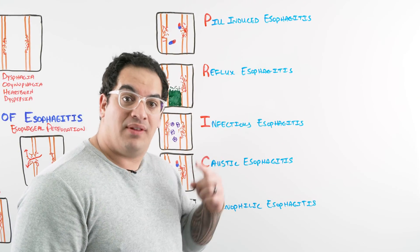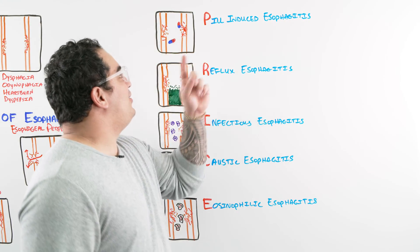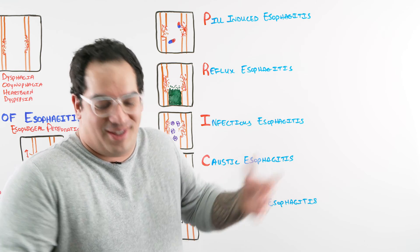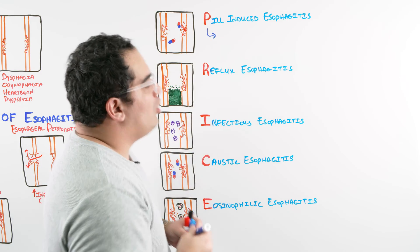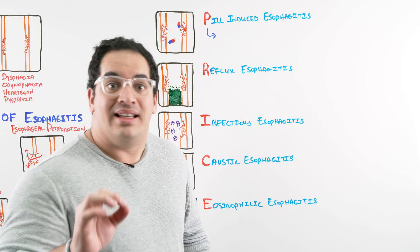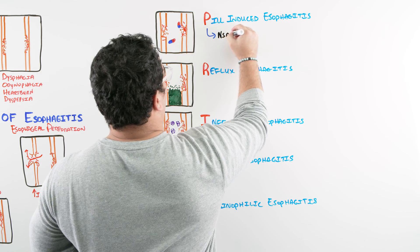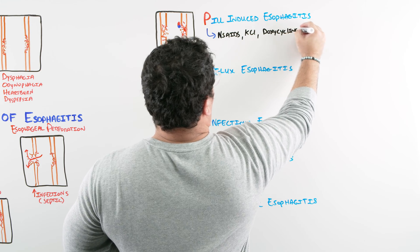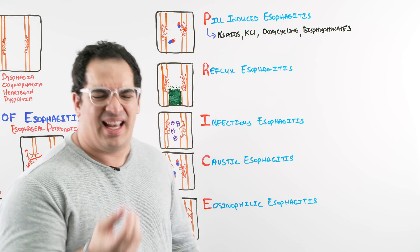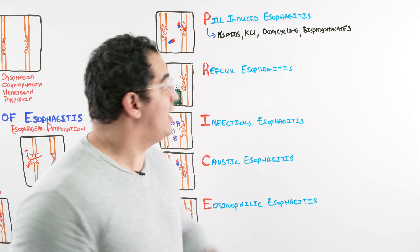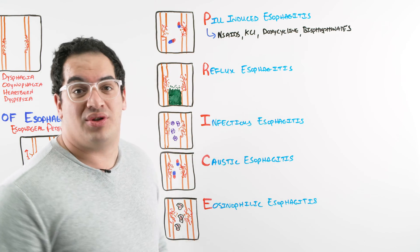What does this include? Pill-induced esophagitis is the first one. The next one is reflux esophagitis. The next one is infectious esophagitis. The next one is a nasty scary one called caustic esophagitis. And the last one is eosinophilic esophagitis. For pill-induced, you gotta ask yourself: what are the pills you're taking that's causing all these problems? The pills that are usually the issue are NSAIDs, doxycycline, potassium chloride, and bisphosphonates.